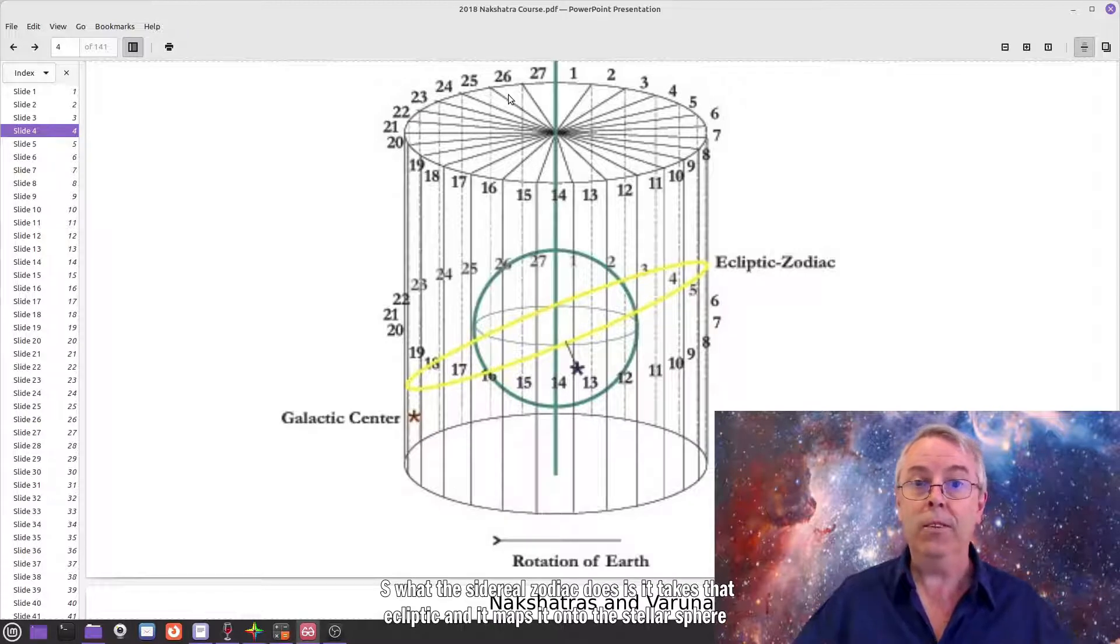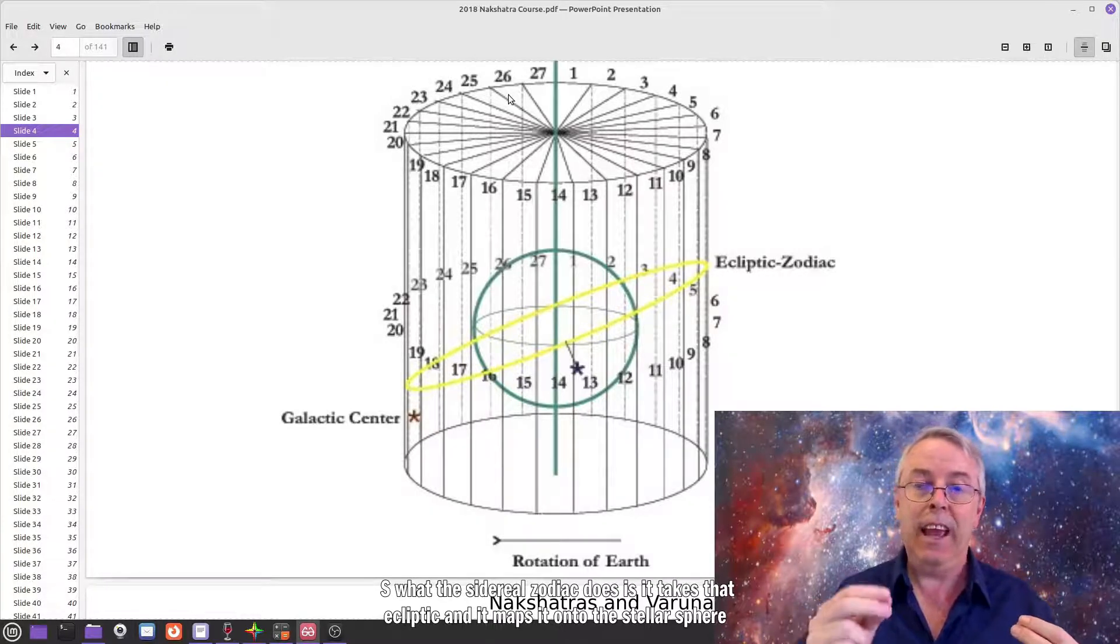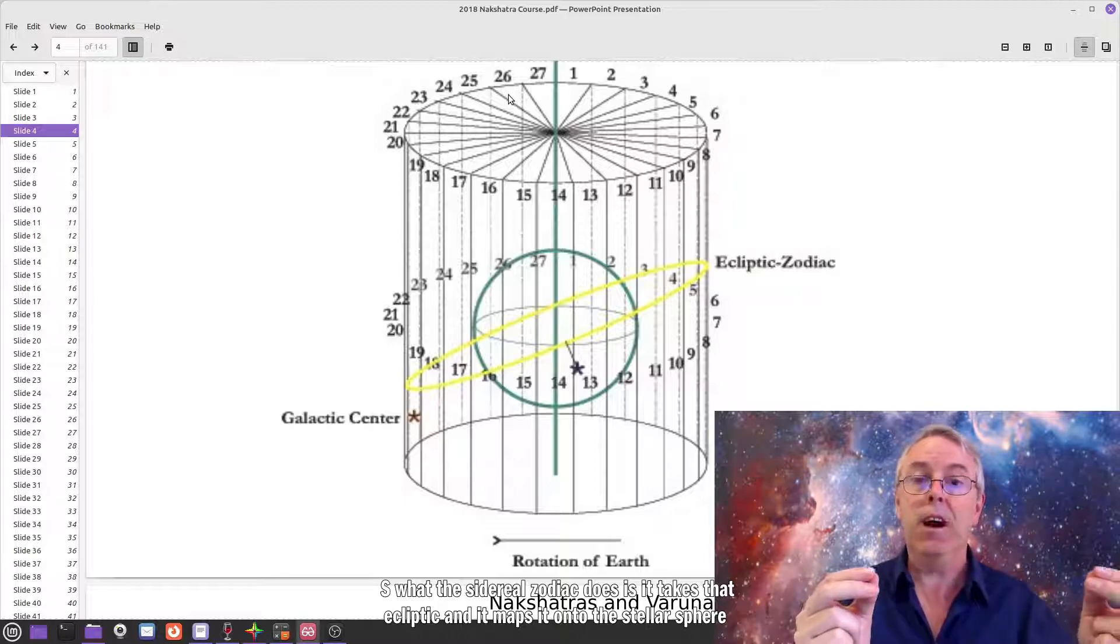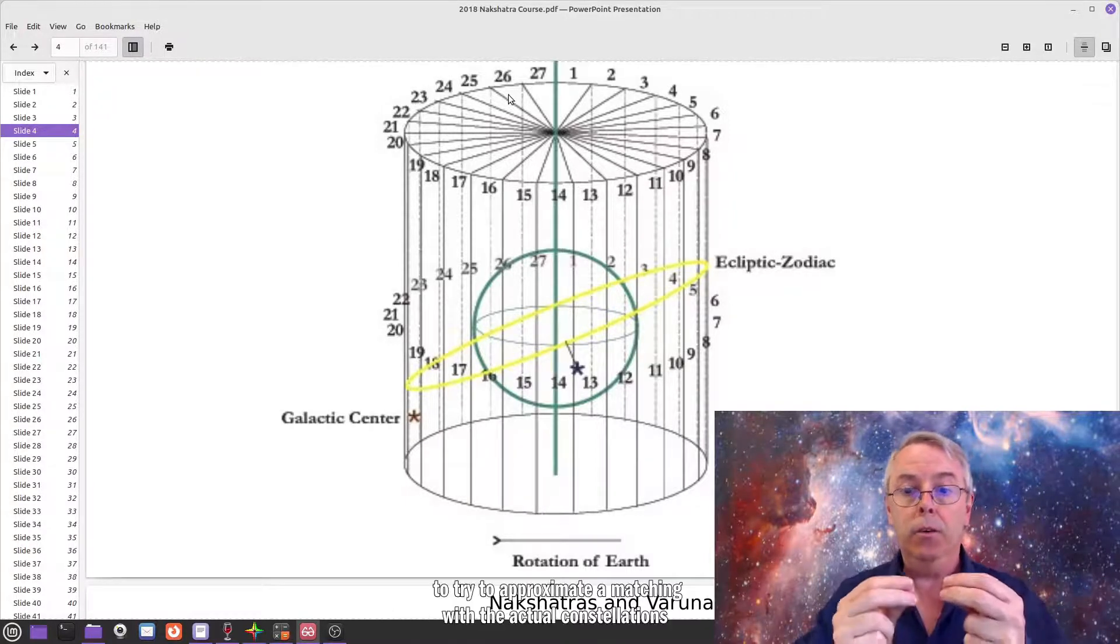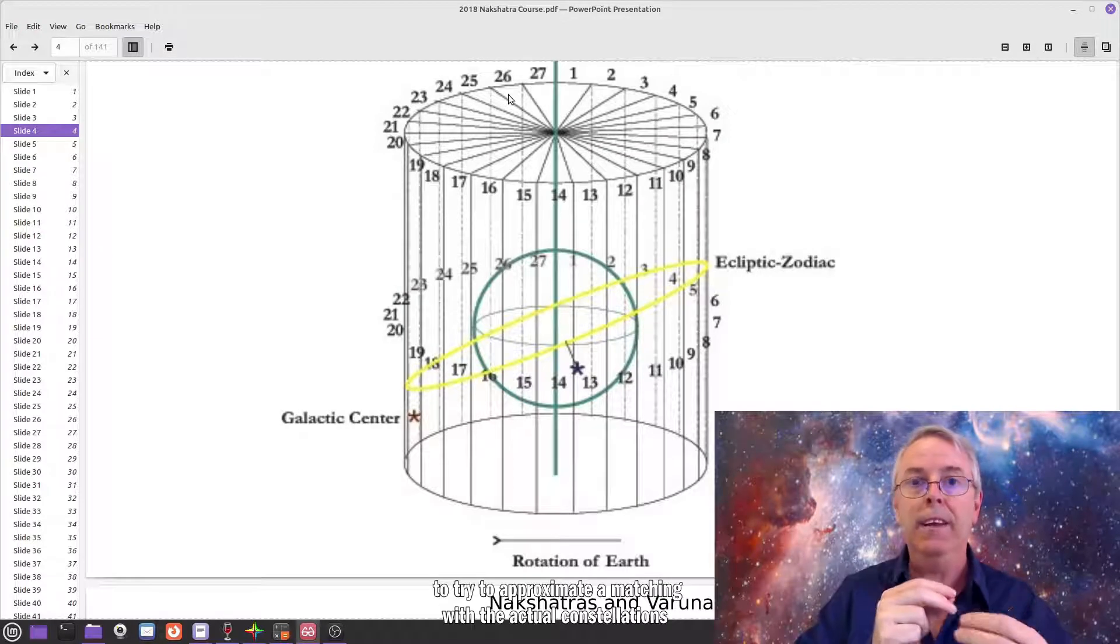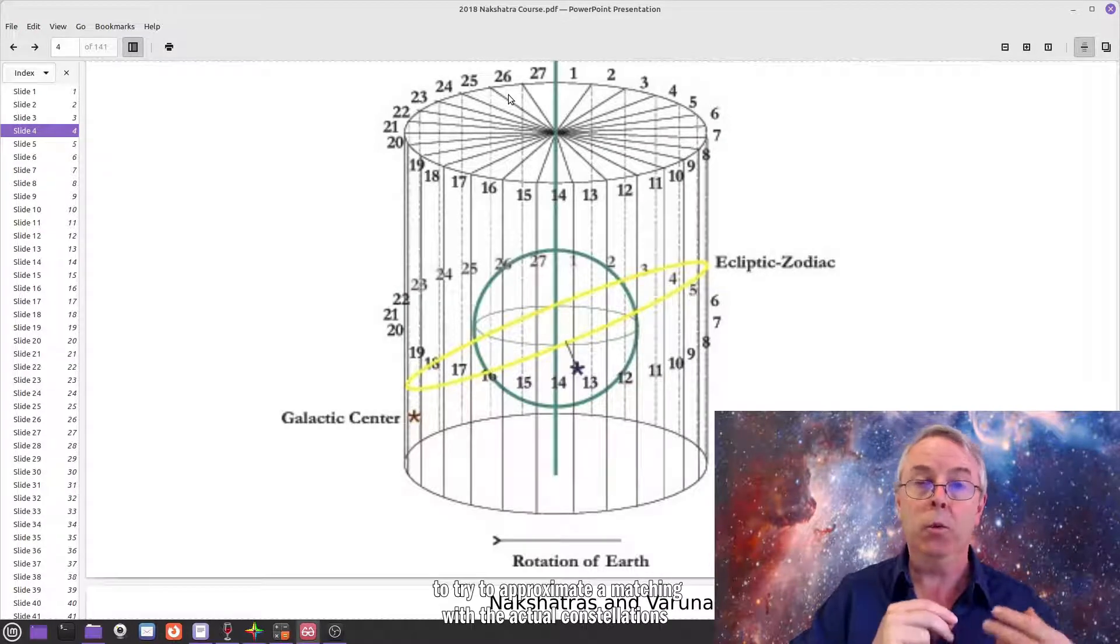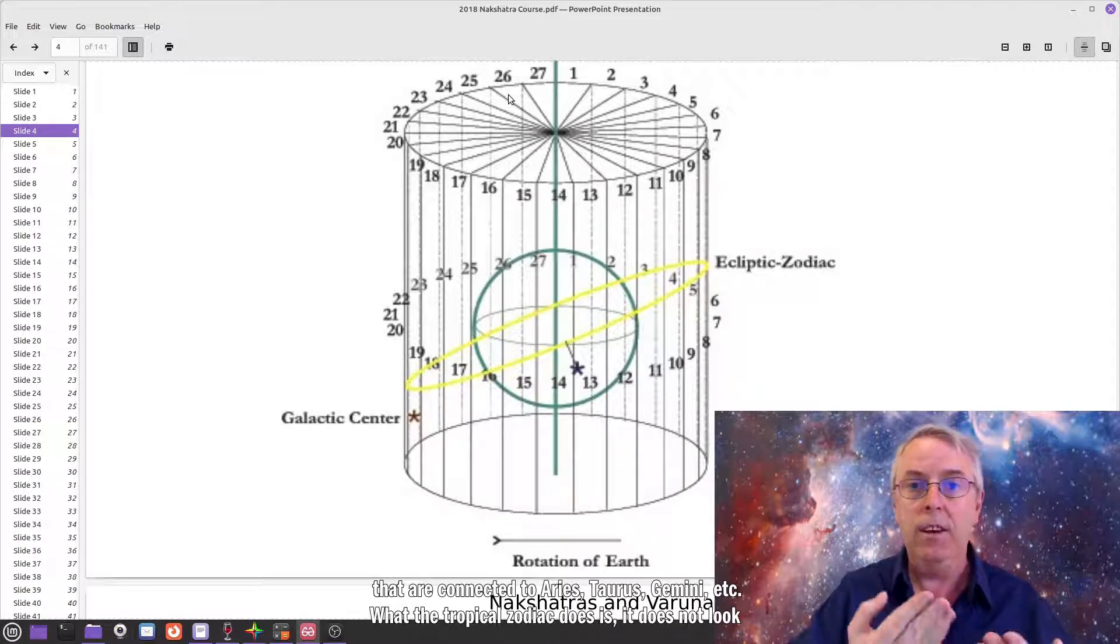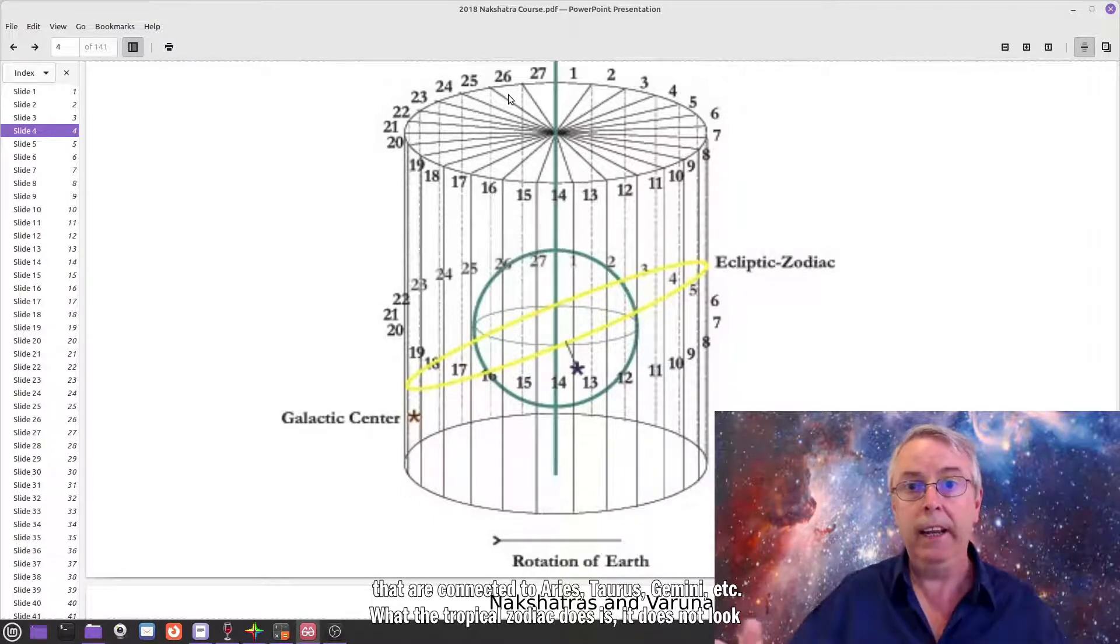So what the sidereal zodiac does is it takes that ecliptic and it maps it onto the stellar sphere to try to approximate a matching with the actual constellations that are connected to Aries, Taurus, Gemini, etc.